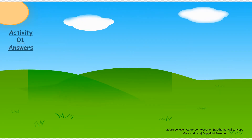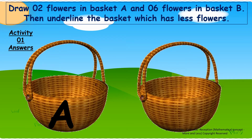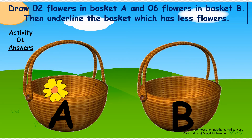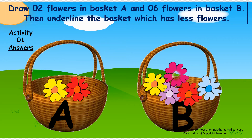Let's see the answers for activity 1. We have to draw 2 flowers in basket A and 6 flowers in basket B, then underline the basket which has less flowers.